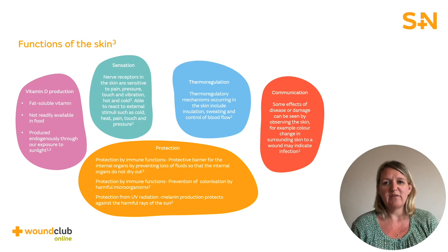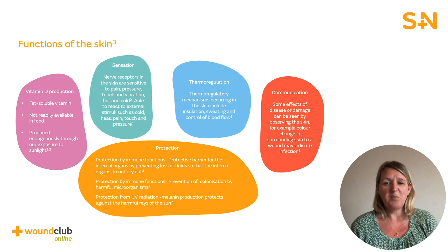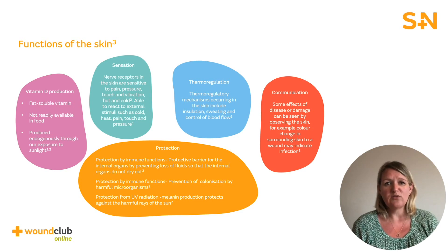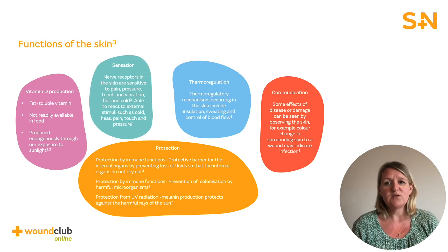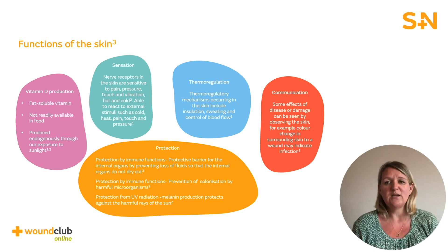The skin also plays a role in thermoregulation. Receptors in the skin monitor temperature and transmit impulses back to the hypothalamus, the part of the brain that coordinates the autonomic nervous system including the control of body temperature. Thermoregulatory mechanisms occurring in the skin include insulation, sweating and control of blood flow. Sweating cools the body through evaporation by increasing blood flow to the skin, and heat is removed from the body by radiation. When the body becomes too cold, heat loss is reduced by vasoconstriction, which reduces the flow of warm blood to the extremities from the body's core.